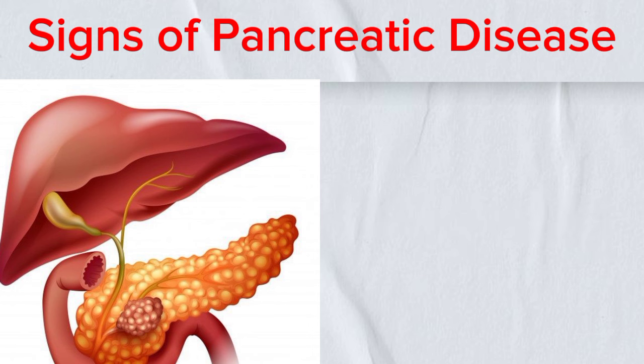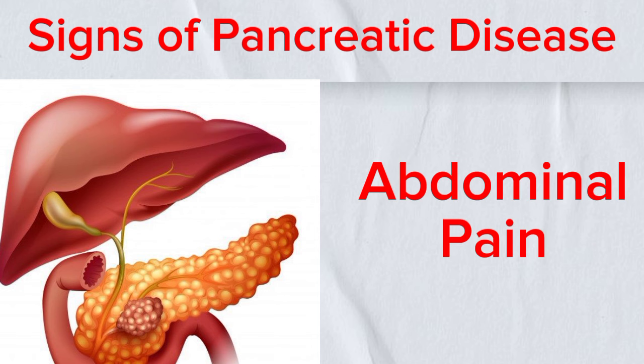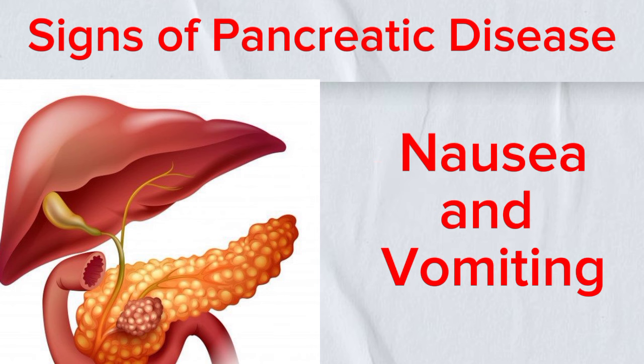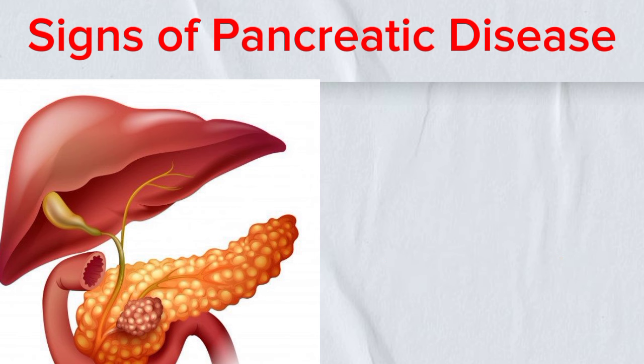Here are 12 signs of pancreatic disease. First, abdominal pain: persistent pain in the upper abdomen, often radiating to the back, is a common symptom of pancreatic diseases like pancreatitis or pancreatic cancer. Second, nausea and vomiting: digestive issues such as nausea and vomiting can occur due to pancreatic inflammation or obstruction of the pancreatic ducts.